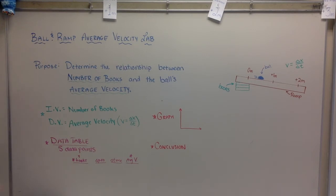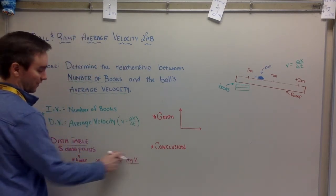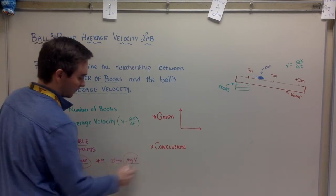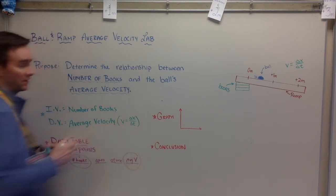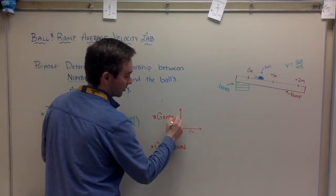And what you're going to do is make a graph. We're going to be graphing the number of books versus the average velocity, because that's our independent and dependent variable. Remember, independent goes here and your dependent variable goes there.